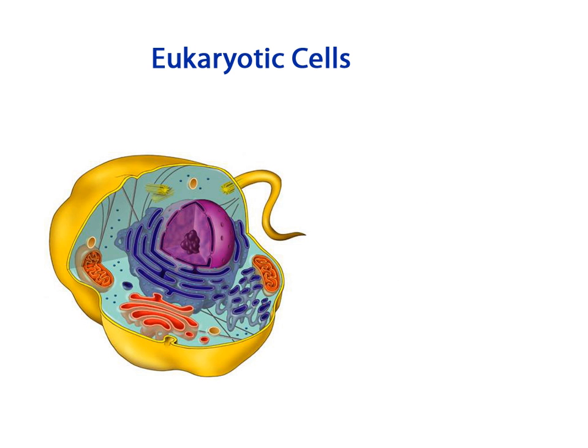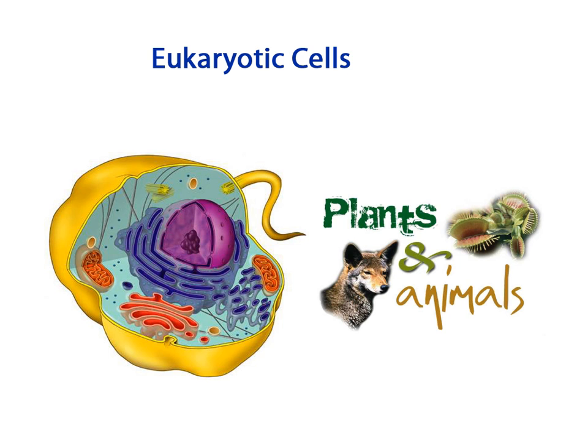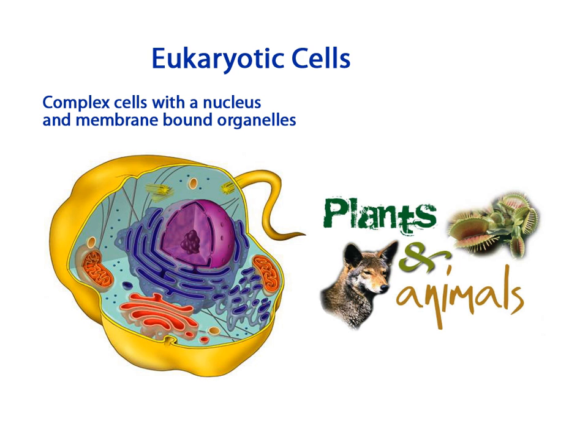Eukaryotic cells, on the other hand, are much more complex and all other organisms, including plants and animals, are made up of eukaryotic cells. Eukaryotic cells do have a nucleus and membrane-bound organelles.